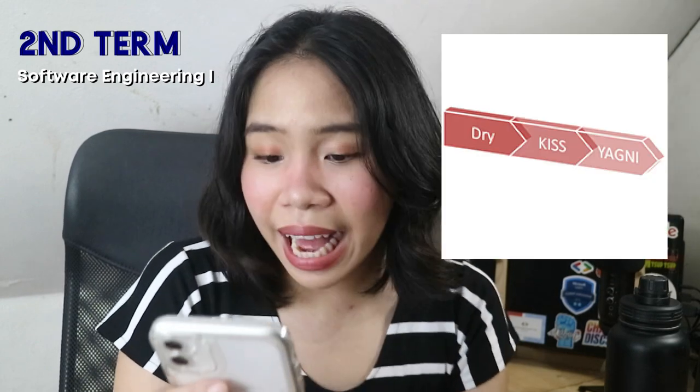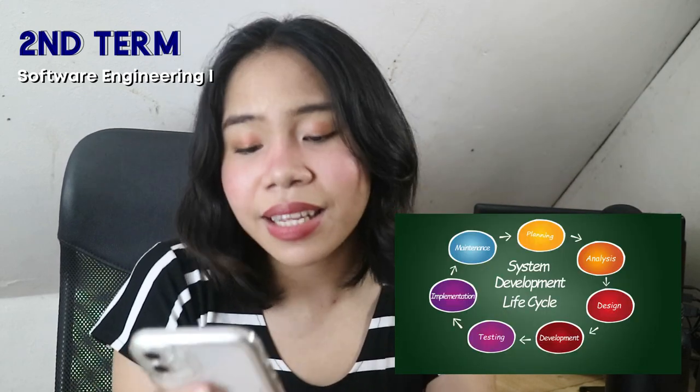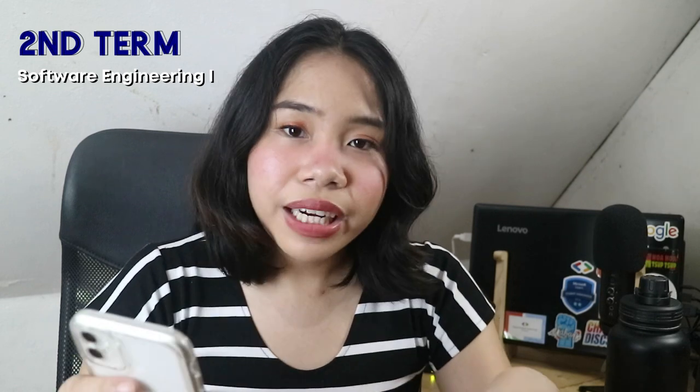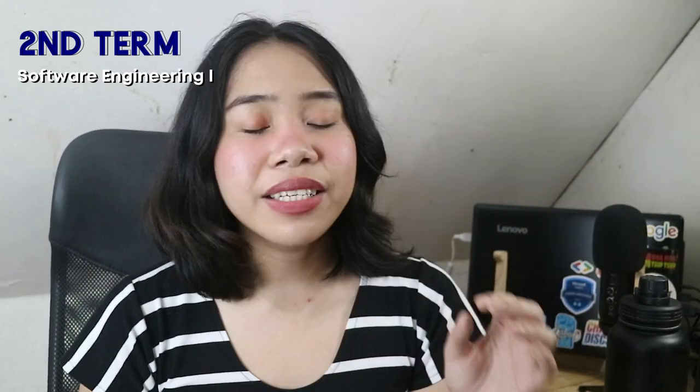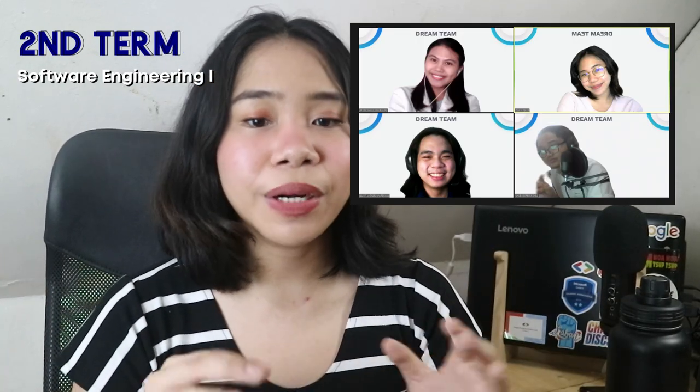The next major subject for second term is Software Engineering 1. We encountered principles like DRY and KISS. I can make a video about software engineering principles if you want. We also learned about the system development life cycle — the planning phase, system analysis phase, all the way to the system maintenance phase. We learned a bit about user interface design and behavioral UML diagrams like use case diagrams and activity diagrams. Software Engineering 1 was also the subject where we had to propose three thesis title proposals, and where I experienced my first ever defense with my group mates.